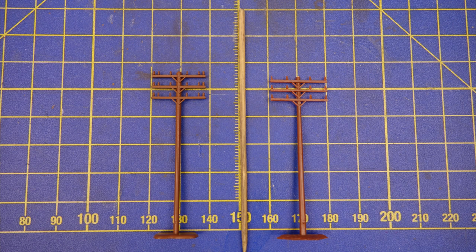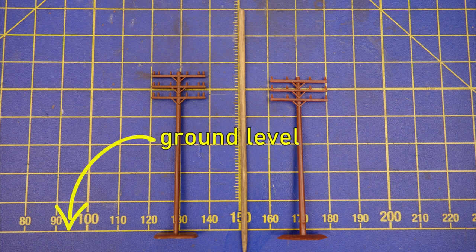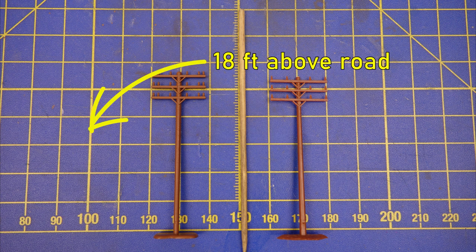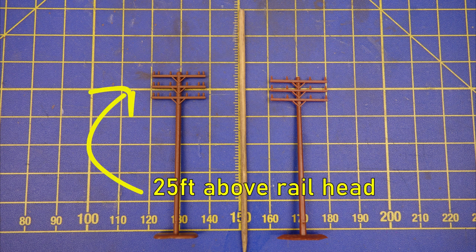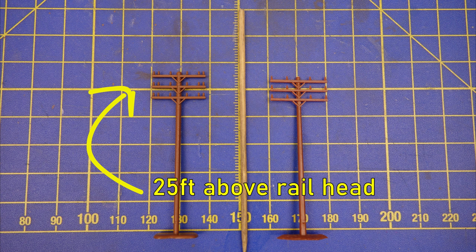Another thing to consider is the height of wires over tracks and roads. Roads that see truck traffic require a minimum height of 18 feet above the road surface. That is about 35mm or about 1 and 3 eighths of an inch in N-Scale. Railroad track typically requires a vertical clearance of at least 25 feet over the railhead for communication wires and a little more for most power lines. That works out to about 50mm or 2 inches in N-Scale.